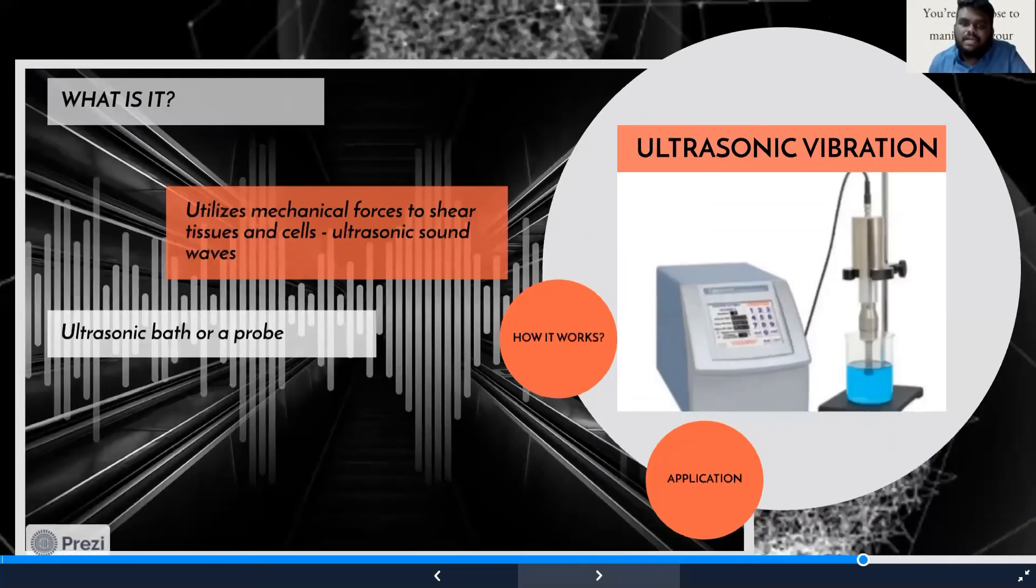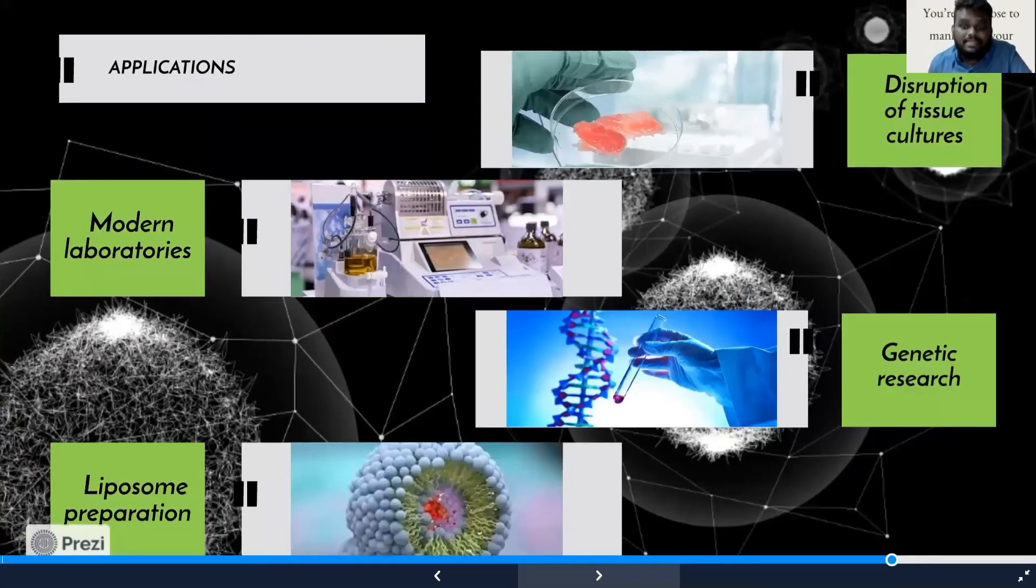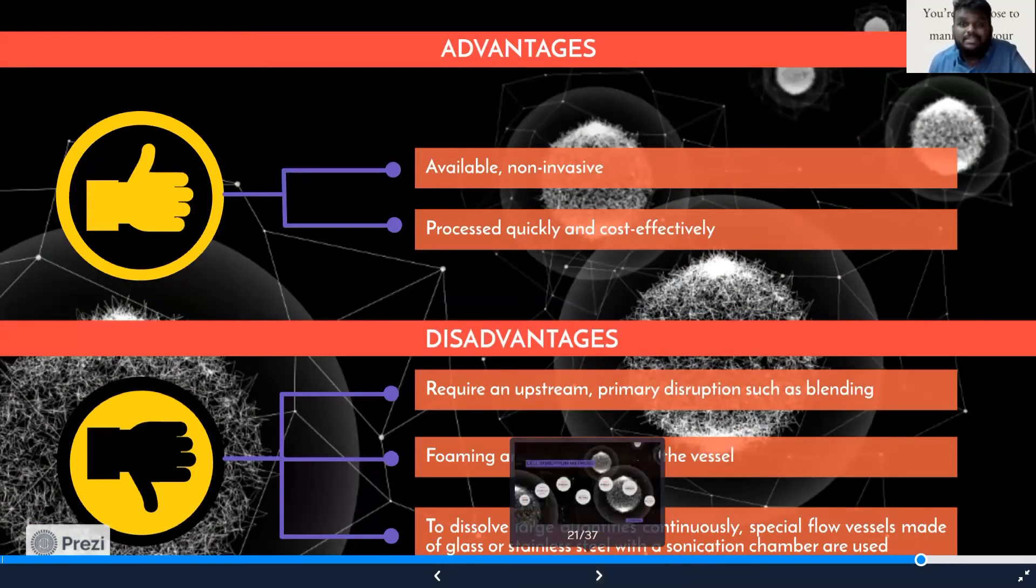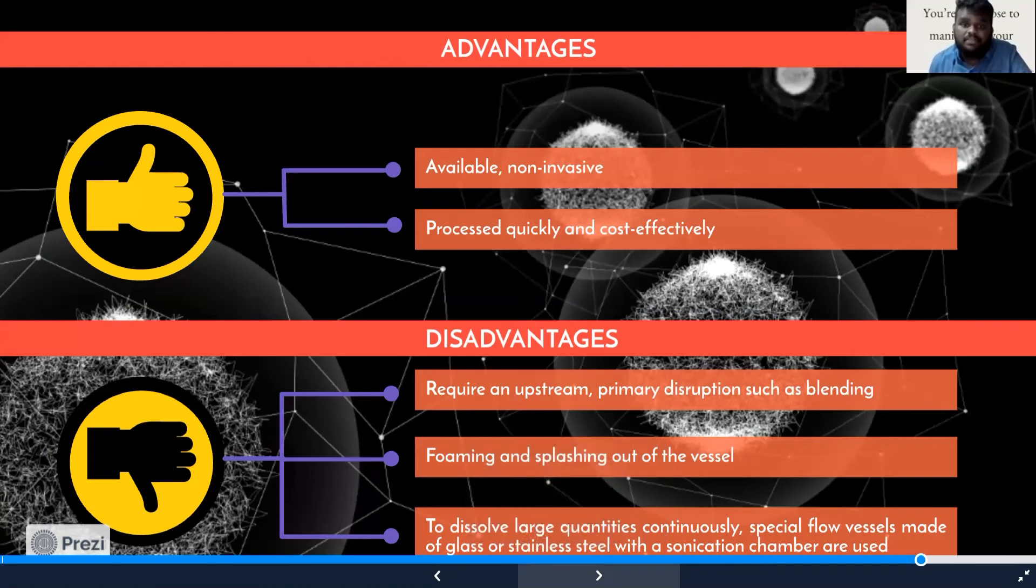In modern laboratories, ultrasonic homogenizers are used to break cell walls. Disruption of tissue cultures can also be done where subcellular components and viruses are disrupted without destruction. Ultrasonic vibration is used in genetic research, for example extraction of DNA in human material, and in urology biochemical membrane analysis of sperm components as well. Advantages include being available and non-invasive as we're using sound waves, and small sample quantities can be processed very quickly and cost-effectively.